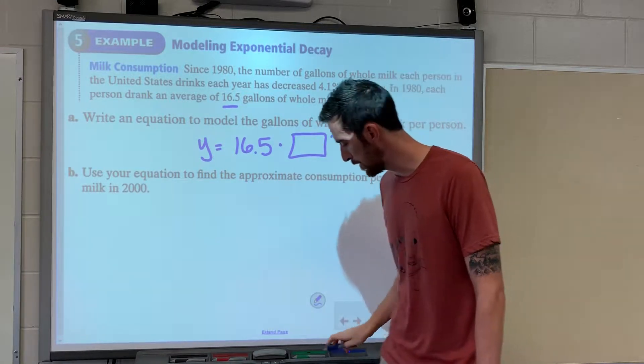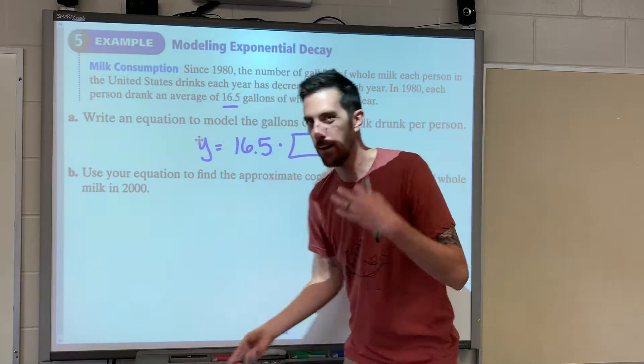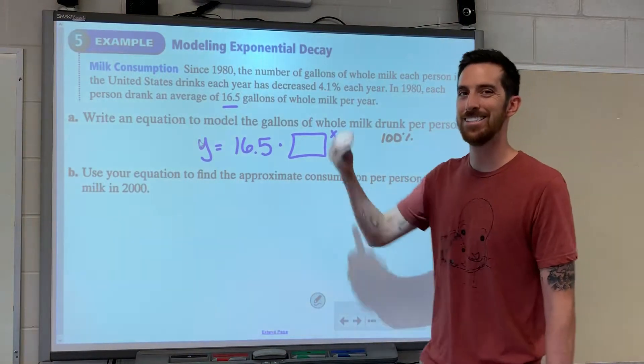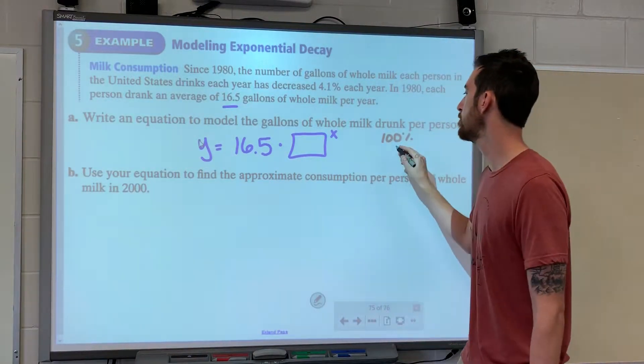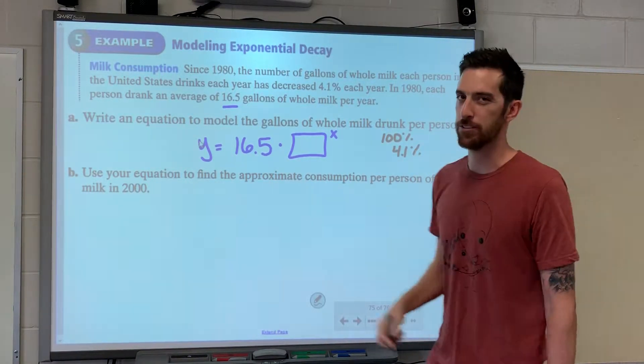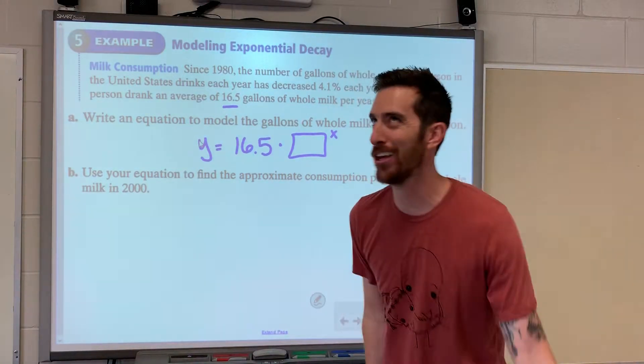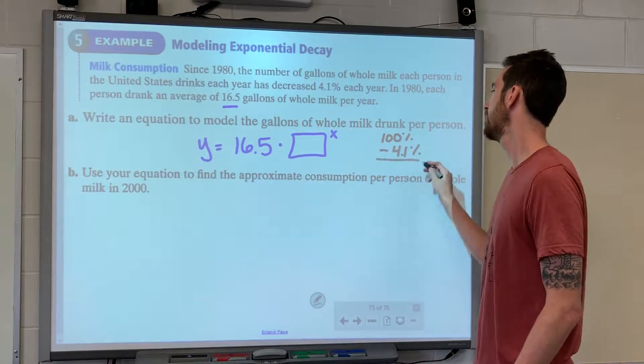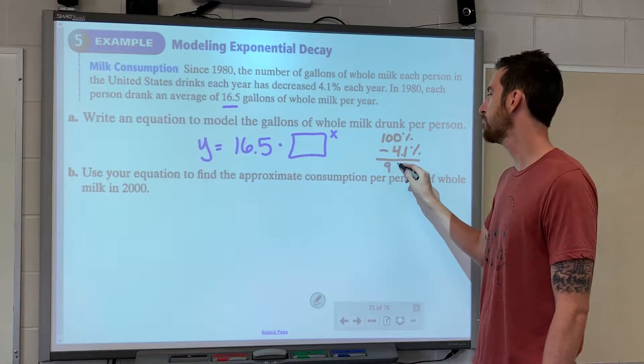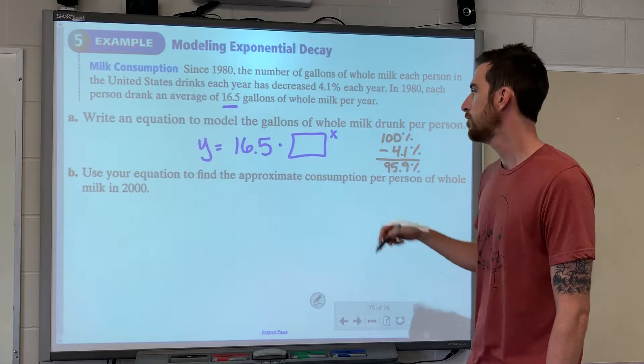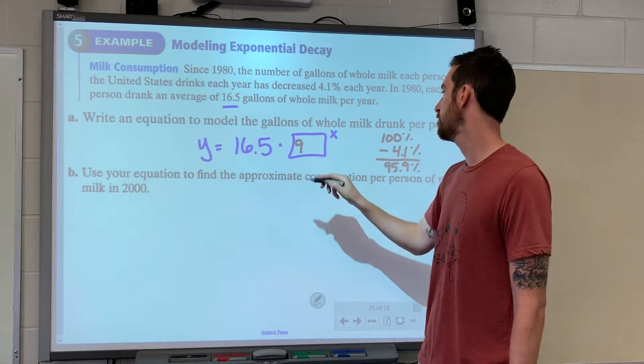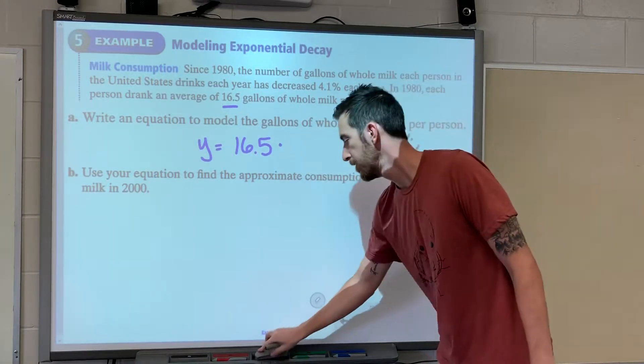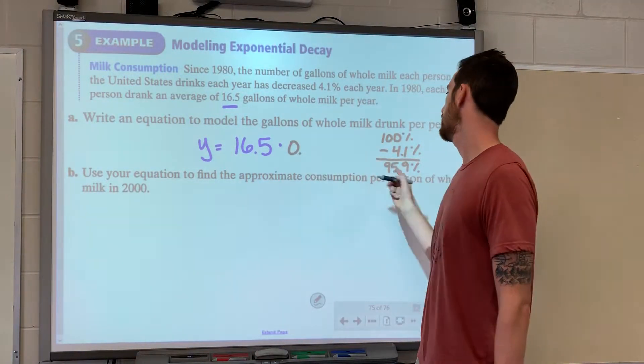Now this number here will have the exponent of x. Remember, start at 100 percent in your brain. It's decreasing 4.1 percent. Before it was increasing so we added it. What do you think we're going to do for decreasing? Yeah, subtracting. So it becomes 95.9 percent, which as a decimal would be 0.959.